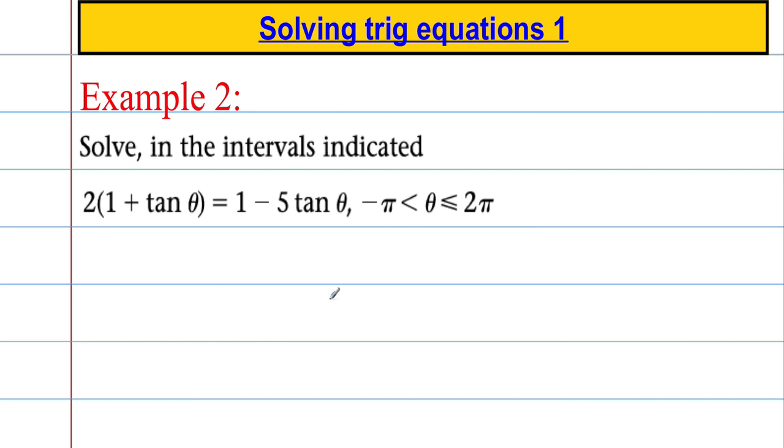Let's see another one in action. We're asked to solve in the interval indicated: 2 times 1 plus tan theta equals 1 minus 5 tan theta. We need to go back as far as negative pi and up as far as 2 pi. Let's see if we can solve this. I'm going to expand the brackets to get 2 plus 2 tan theta equals 1 minus 5 tan theta. Collecting anything that involves tan theta to one side by adding 5 tan theta to the left hand side gives me 7 tan theta, and taking 2 off both sides gives me negative 1. So tan theta equals negative 1 over 7.